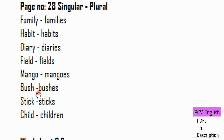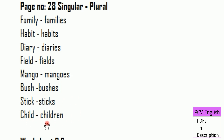Bush — SH ending, add ES — Bushes. Sticky — Sticks. Child — Children. Children is the plural form of Child — an irregular plural.